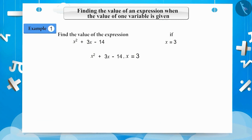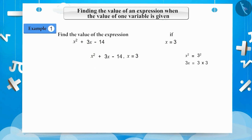We substitute x equals 3 in the given expression. On doing so, x squared becomes 3 squared and 3x becomes 3 multiplied by 3. Our expression becomes 3 squared plus 3 multiplied by 3 minus 14. 3 squared is 9 and 3 multiplied by 3 is 9.